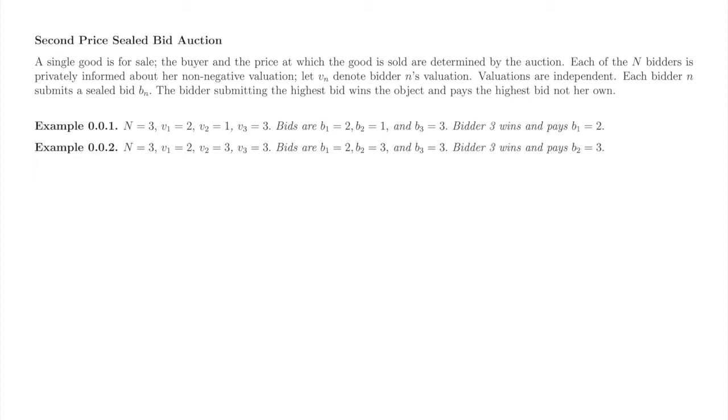In this example, we keep the same three bidders, but now let them bid 2, 3, and 3, respectively. In the event of a tie for the highest bid, a winner is selected at random from the highest bidders. Suppose the tie breaks in favor of bidder 3. She wins and pays 3, since bidder 2's bid of 3 is the highest bid not belonging to bidder number 3.